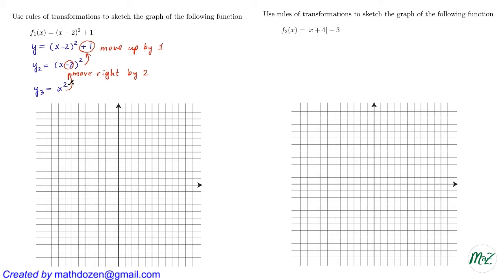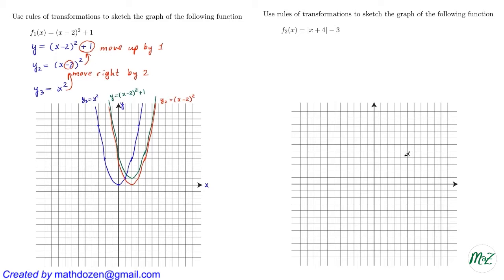The graph of y3 = x² is easy to obtain — just plot a few x-values to get the parabola shape. Then to get y2, shift the blue graph right by 2 units to get the red graph. Finally, move the red graph up by 1 unit to get the green graph, which is the graph of the original function y = (x - 2)² + 1.